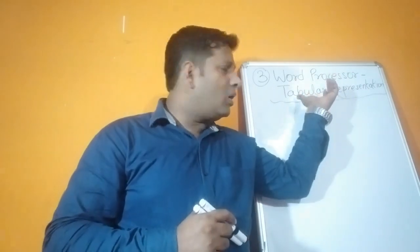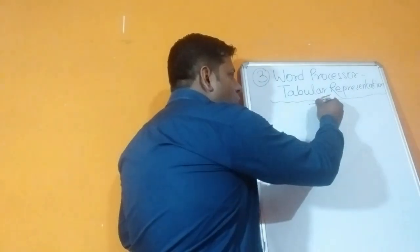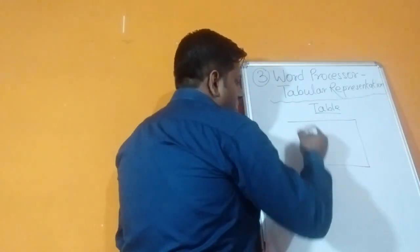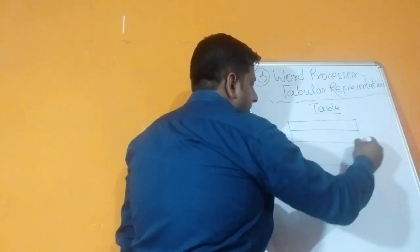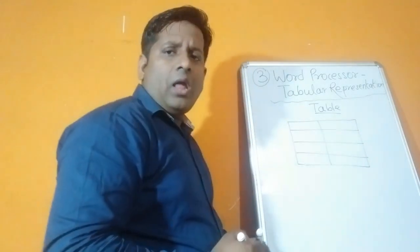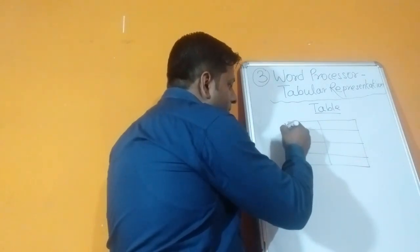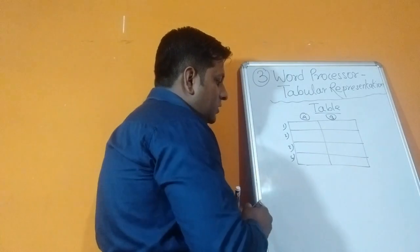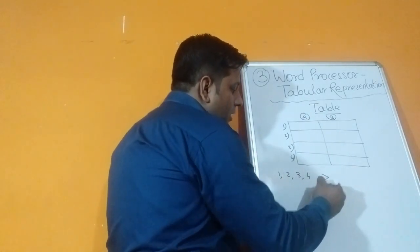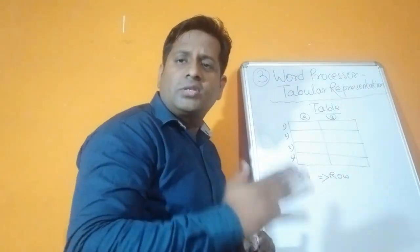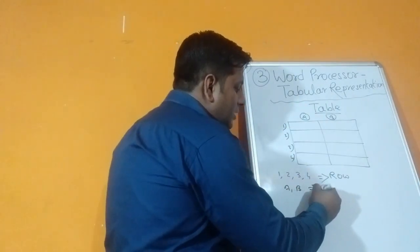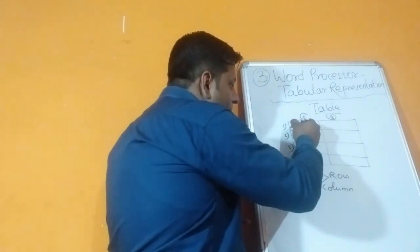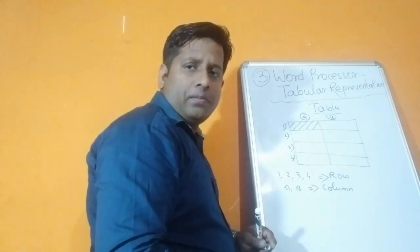In this chapter we are going to learn about tabular representation - that is, tables. We can create a table in Microsoft Word. Now, in a table, the parts numbered one, two, three, four are known as rows. How many rows are there? Three rows in this table. And A, B are known as columns. How many columns are there in this table? There are two columns.